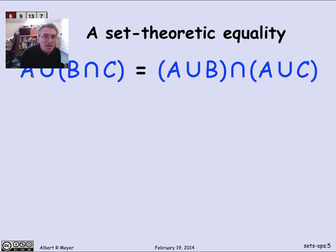It says that if you take A union the set B intersection C, that's equal to the set A union B intersected with A union C.